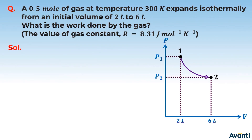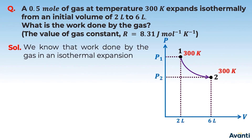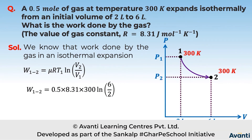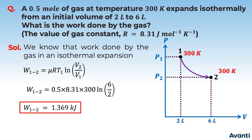This is an isothermal process at 300 Kelvin. The work done in isothermal expansion is μRT1 ln(V2/V1). Substituting values: 0.5 moles × 8.31 (R) × 300 K × ln(6/2). The work turns out to be 1.369 kilojoules.